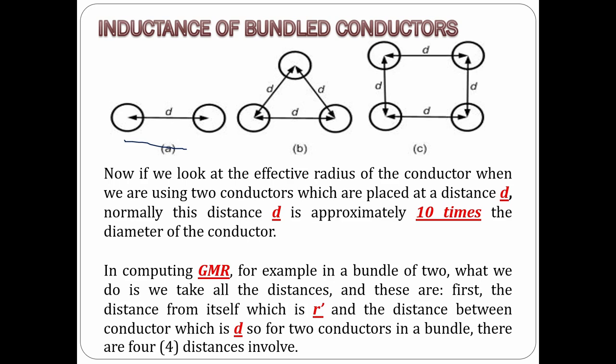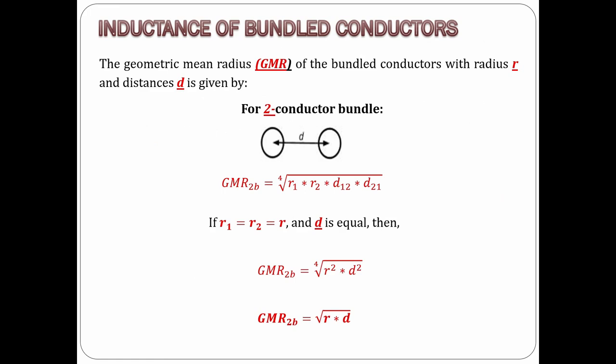In computing the inductance of bundled conductors, we need to first determine the effective radius, or geometric mean radius (GMR), of the bundled conductors. For two bundled conductors, the formula uses r as the radius and d as the distance between conductors. The number of terms comes from squaring the number of conductors — so for two conductors it is two squared, which is four. The root is also four. The first two terms are the radii r1 and r2, and the last two terms are the distances d12 and d21.